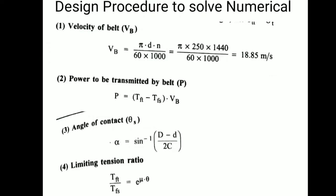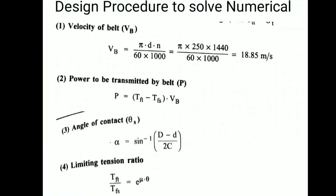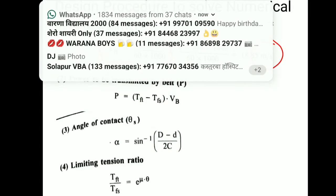This will be the sequence I'll provide and you can use this at the time of solving numericals step-wise. First step is to find out the velocity of belt: VB equals π×d×n divided by 60×10³, where the answer is in meters per second. This is very important.